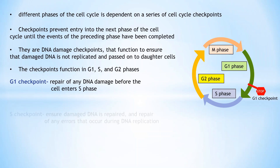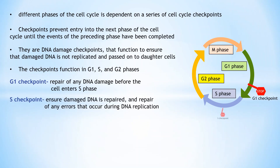The S checkpoint not only provides continual monitoring of the integrity of DNA to ensure that damaged DNA is repaired before it is replicated, but also provides a quality control monitor to promote repair of any errors that occur during DNA replication, like incorporation of incorrect bases or incomplete replication of DNA segments.